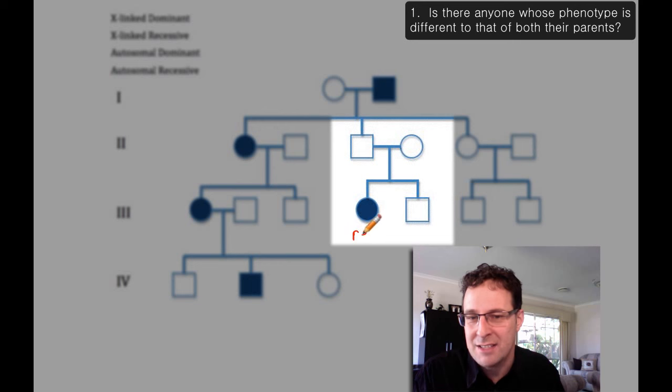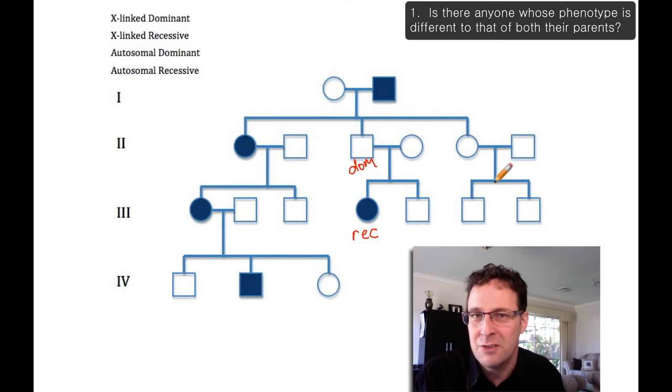That shows us that she has the recessive phenotype. And therefore, anybody in the pedigree who isn't shaded must have the dominant phenotype.